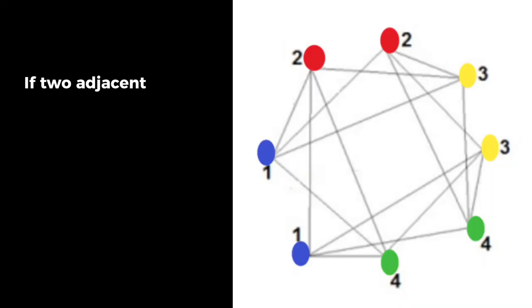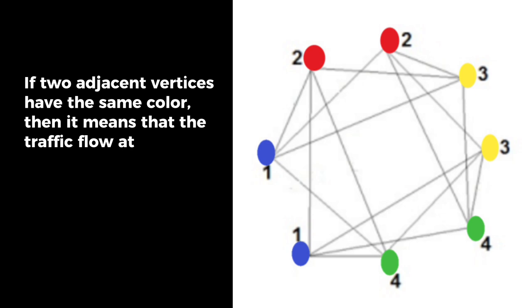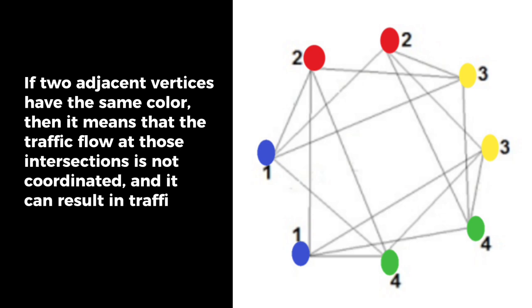If two adjacent vertices have the same color, it means that the traffic flow at those intersections is not coordinated, and it can result in traffic jams and delays.